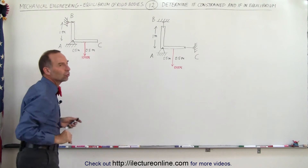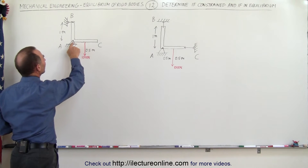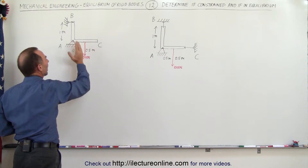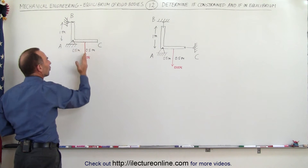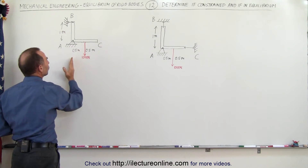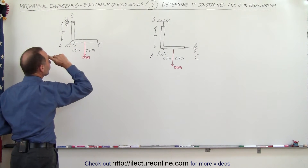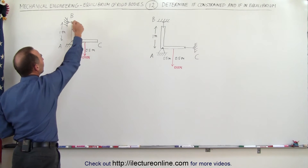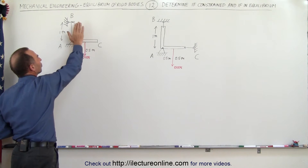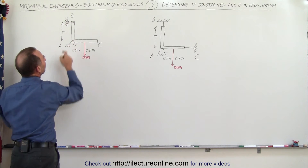This point is counteracting all the force of the thousand newtons pushing down. We'll have a thousand newtons of force pushing in this direction, and in addition to that, we have a moment about this point which causes the cable to pull in this direction.